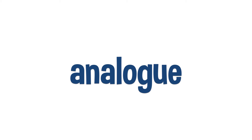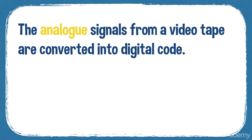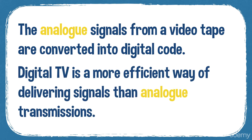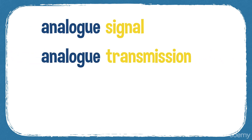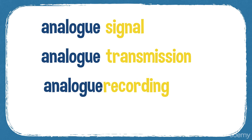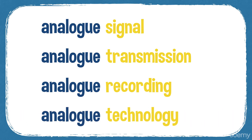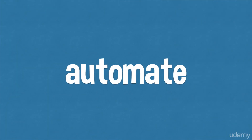In American English we often spell it 'analog.' For example, the analog signals from a videotape are converted into digital code. Digital TV is a more efficient way of delivering signals than analog transmissions. So you have analog signal, analog transmission, analog recording, analog technology — it's a very specialized word, so there are no synonyms.